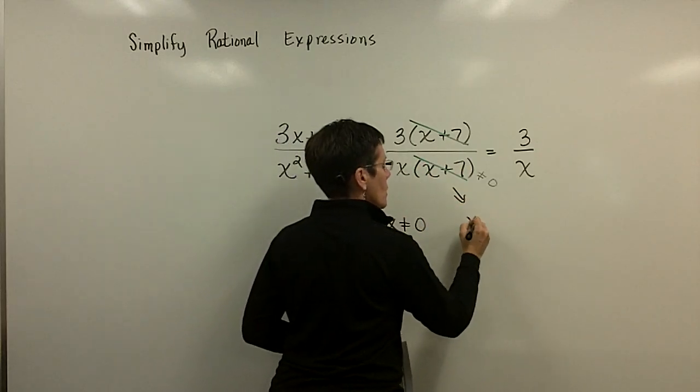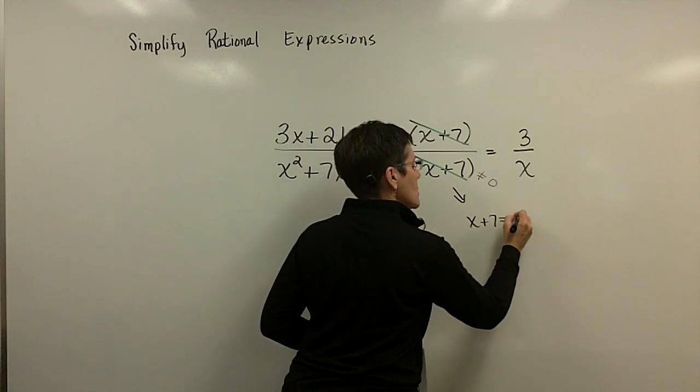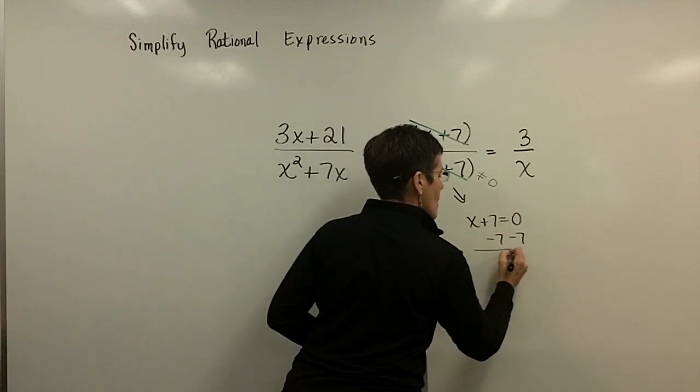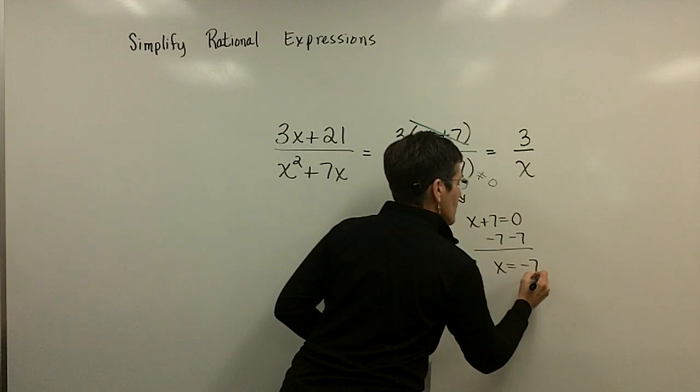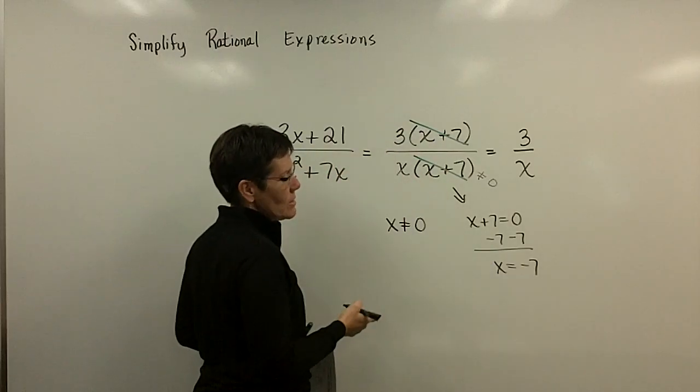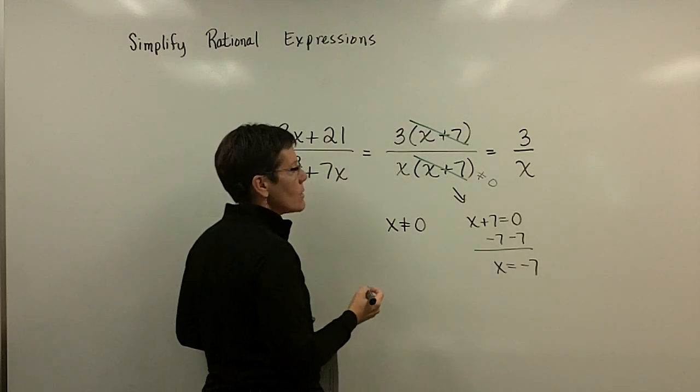The zero product rule here would let me take x plus 7 and set it equal to zero and subtract 7 from both sides, and a solution for x for that equation, if it was equal to zero, is a negative 7.